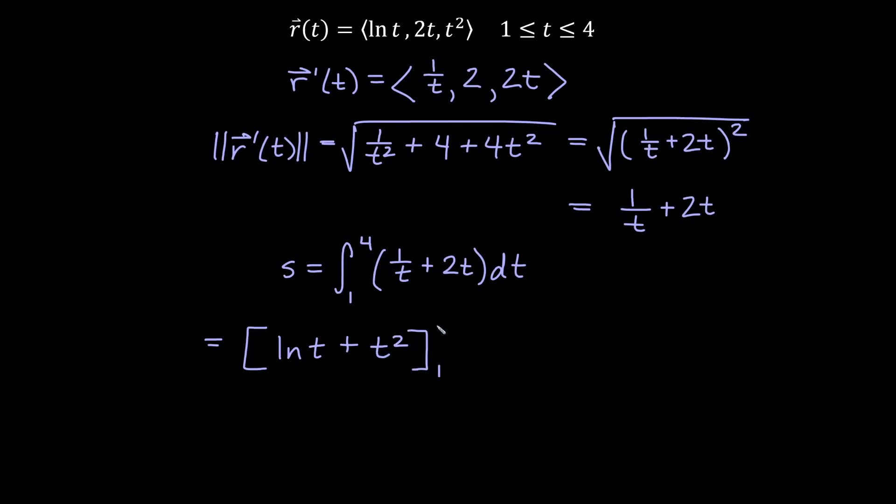We'll evaluate that from 1 to 4. So we will end up with ln of 4 plus 4 squared, which would be 16, minus ln of 1 plus 1 squared, which is 1. And a couple of things we might want to notice here. So ln of 1 is actually 0. So we get ln of 4 plus 16 minus 1. So we really get plus 15. And that is our solution for the arc length on this function from t equals 1 to t equals 4.